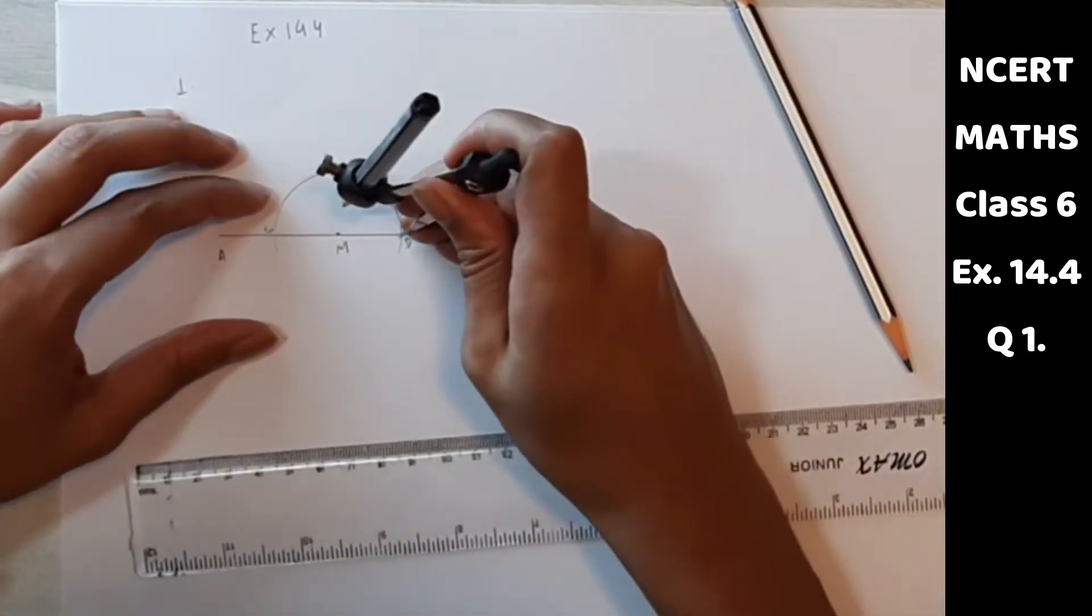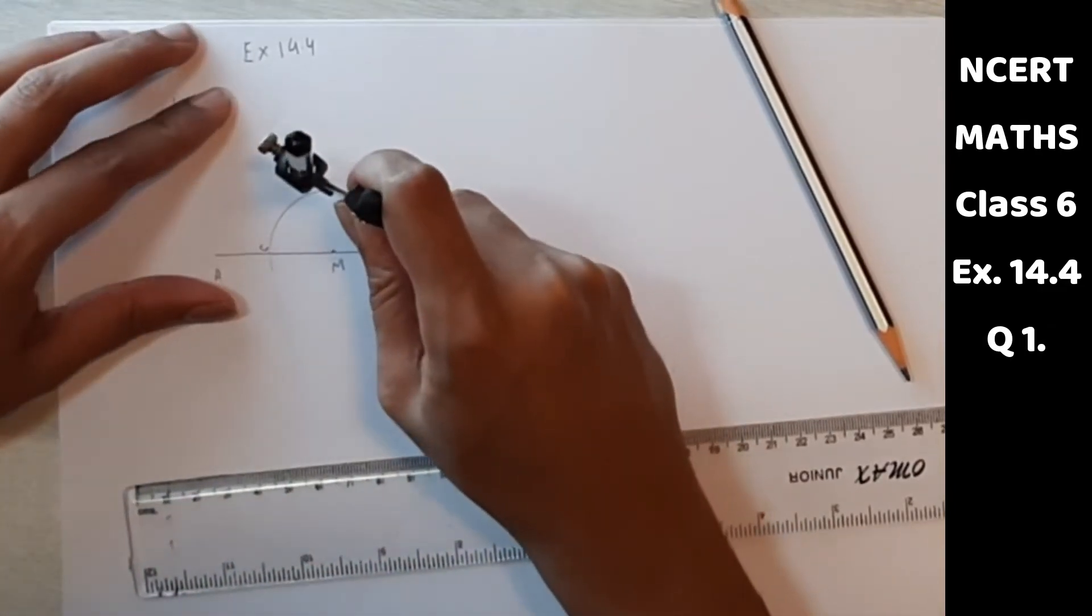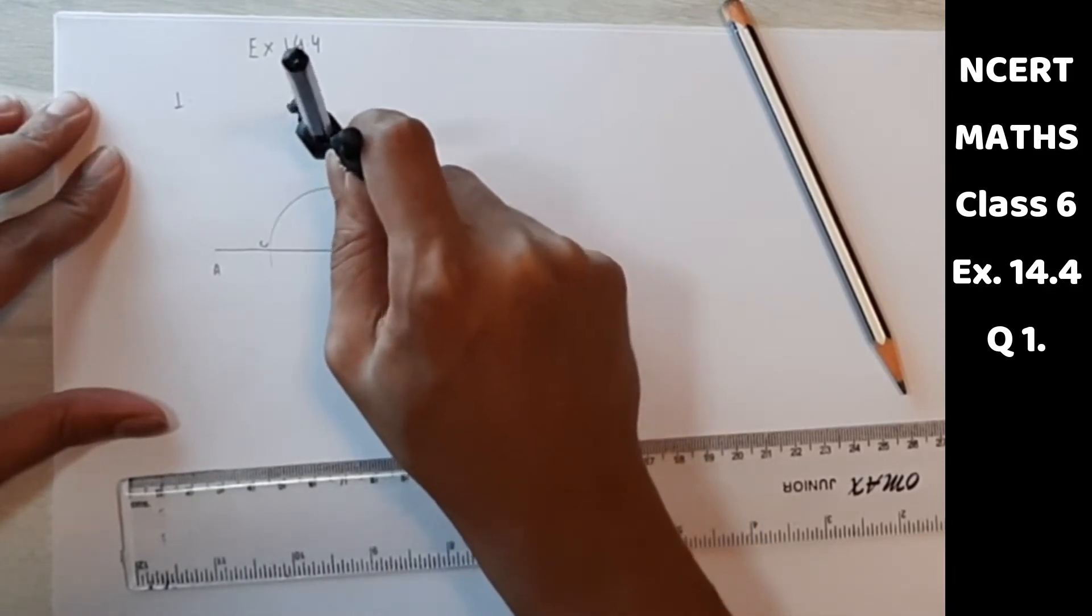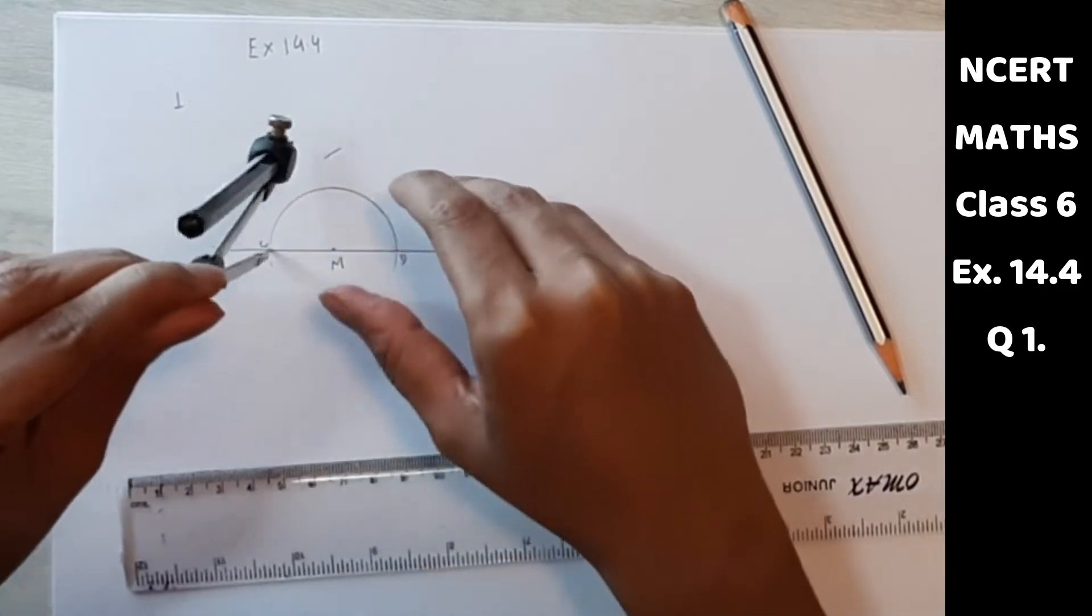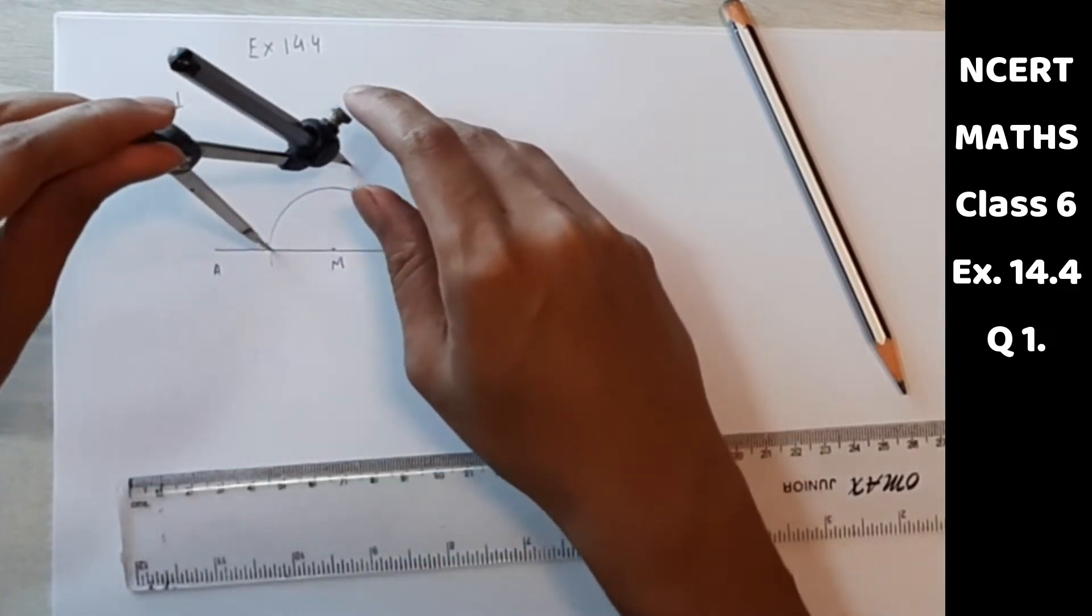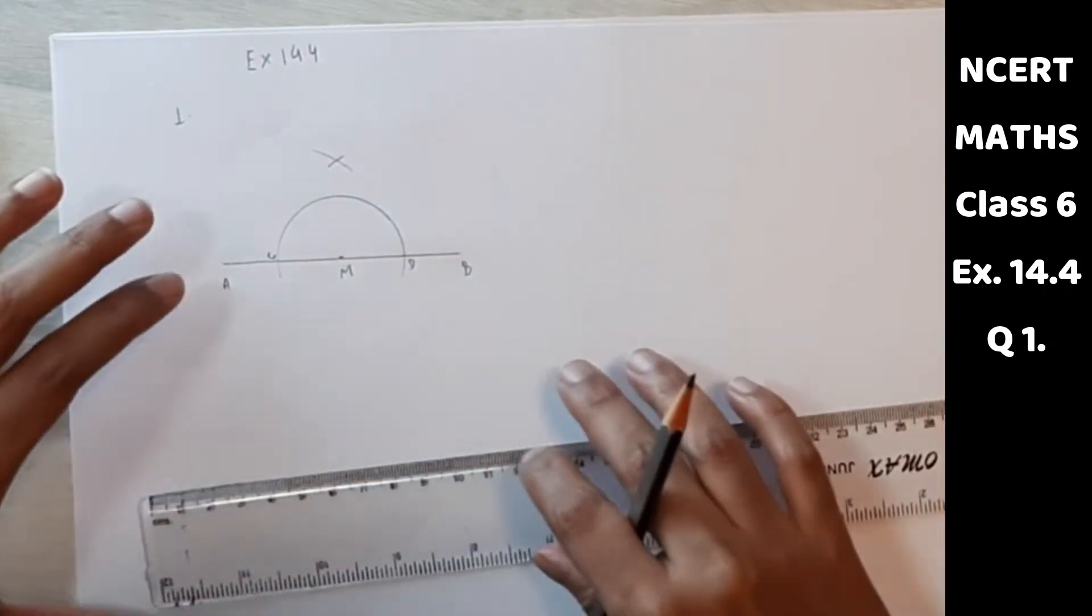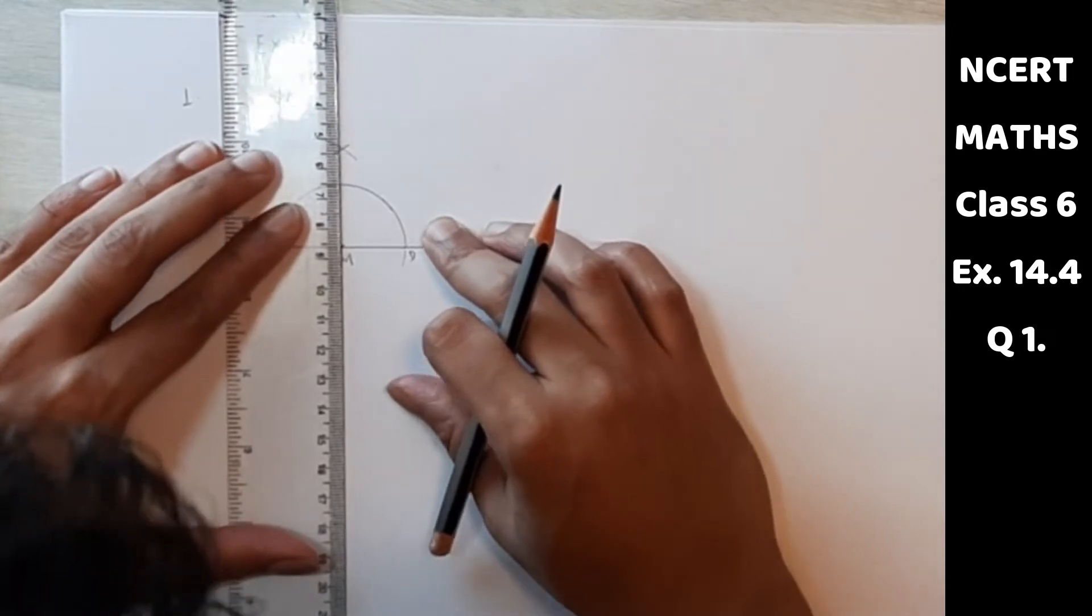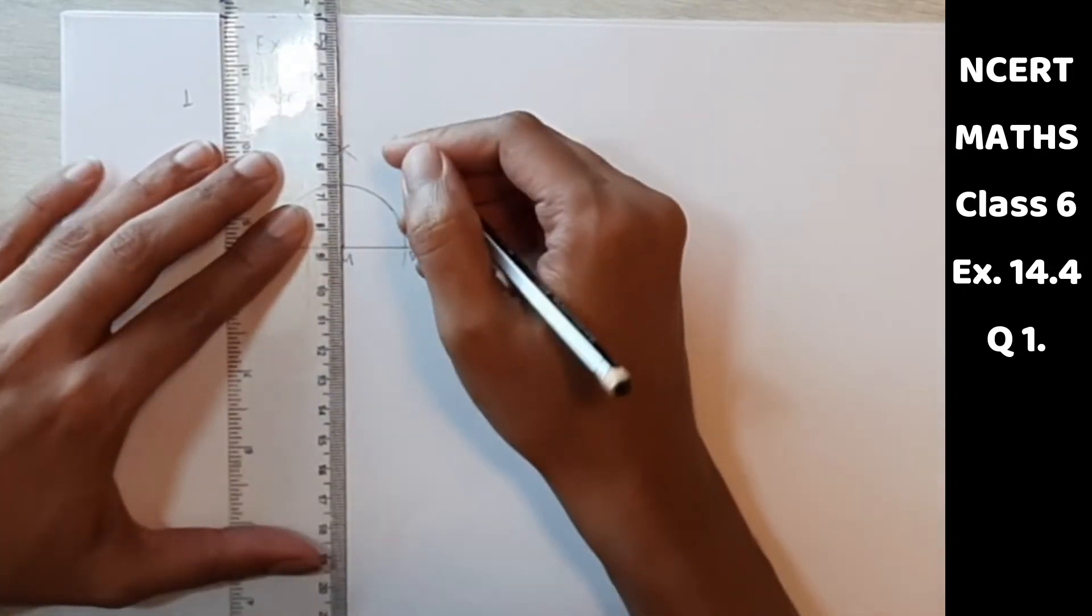So now from CD, we will make two arcs. We will join this to M.